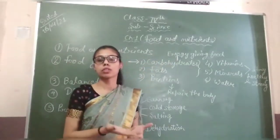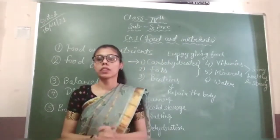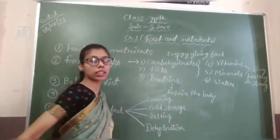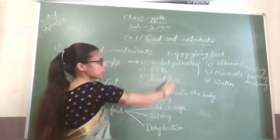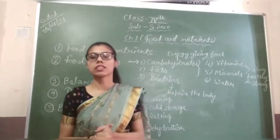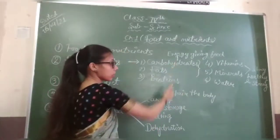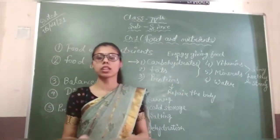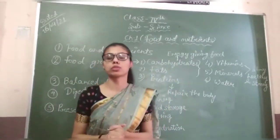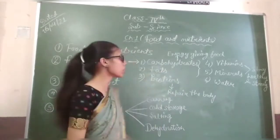The first group is energy-giving foods. We receive energy from this type of food — that is carbohydrates and fats. Examples of carbohydrates are sugar and starch. And the example of fats — fats also provide us energy.